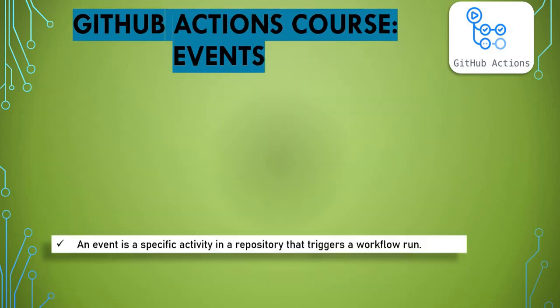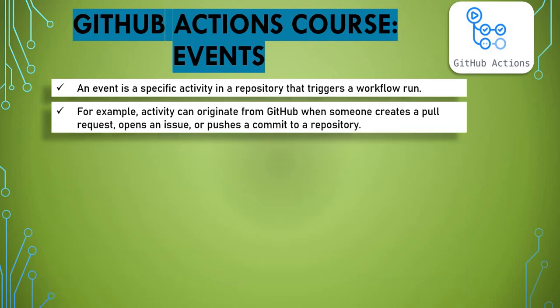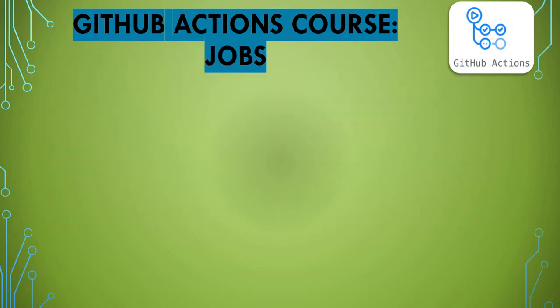Another key component of GitHub Actions is the event. An event is a specific activity in a repository that triggers a workflow. Inside the workflow YAML we define events. For example, an activity can originate from GitHub when someone creates a pull request, opens an issue, or pushes a commit to the repository. Based on these events you trigger your workflow. For example, a sample workflow YAML might define 'on: push' with a specific branch — when a push event happens to the master branch, that workflow will run.